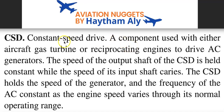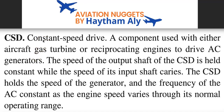The Constant Speed Drive is a component used with either aircraft gas turbine or reciprocating engines to drive an AC generator at constant speed. IDG — Integrated Drive Generator — equals Constant Speed Drive plus AC Generator. This is why we need a Constant Speed Drive on the main aircraft engine: the speed of the output shaft of the Constant Speed Drive is held constant.